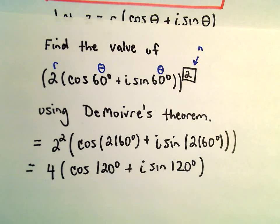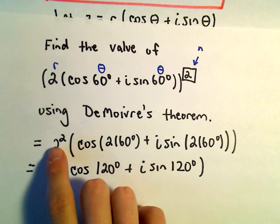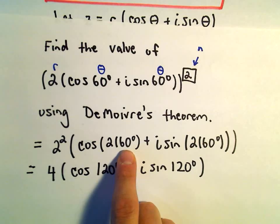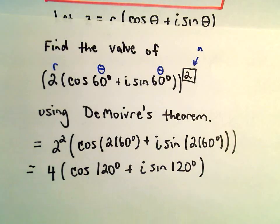So again, very simple. You know, kind of one more formula to remember, but it's easy to use. Just raise your r to the power, multiply your thetas by that power, and you get your solution.